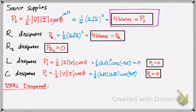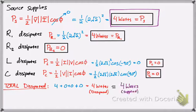The total power dissipated: we have 4 watts from R1, 0 from R2, 0 from L, and 0 from C, giving us 4 watts total. By conservation of power, dissipated power equals power supplied. So 4 equals 4 watts. Therefore, we're good, and that's how you calculate power dissipated by each component.